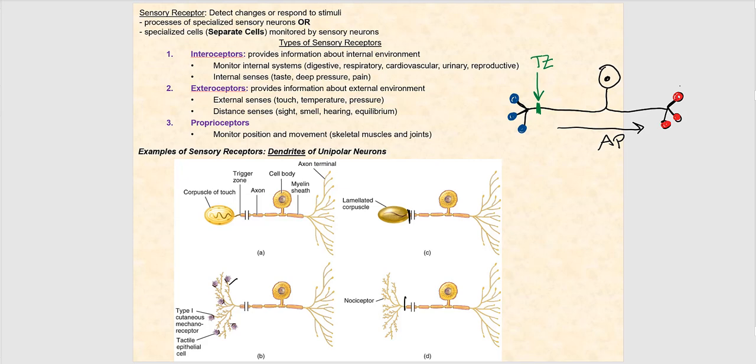Let's now talk about sensory receptors. These detect changes or respond to stimuli. What they consist of are processes of specialized sensory neurons, which I will discuss, and as well as separate cells that are monitored by sensory neurons, something I'll point out later.